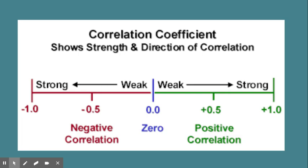If you said negative 0.9, you're correct. A lot of us get confused because we think 'negative' means lower — but no, the negative only means the direction of the relationship. It's a strong negative correlation.